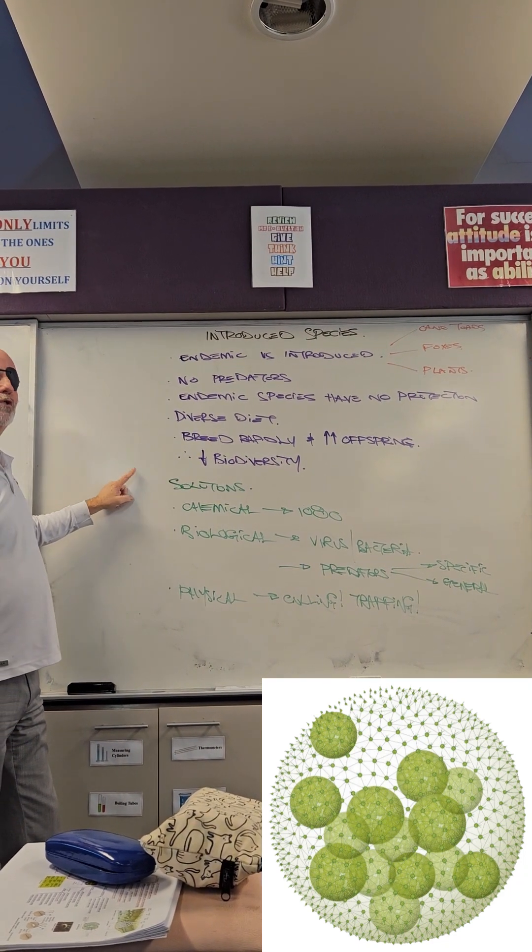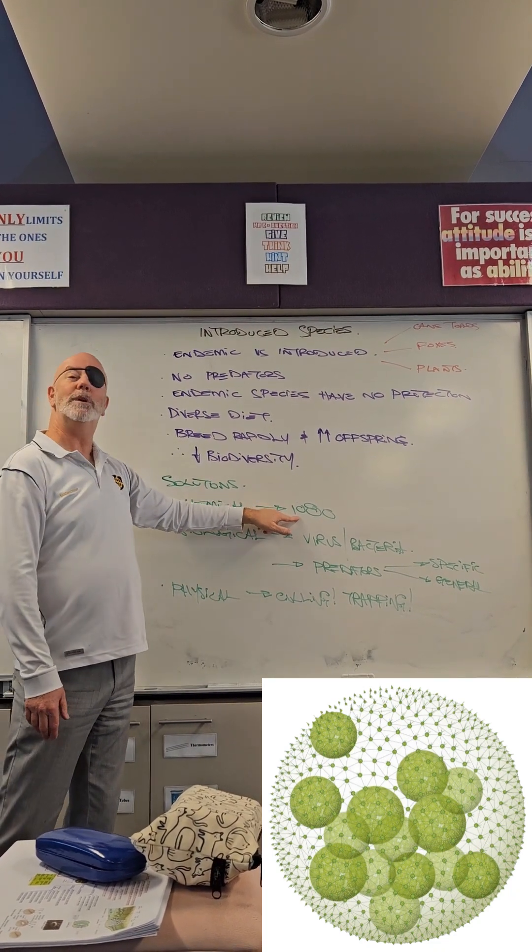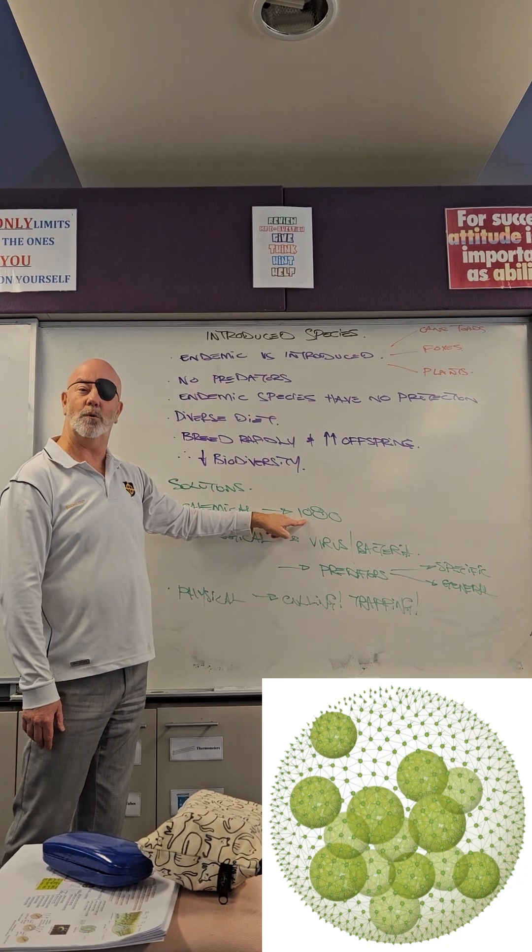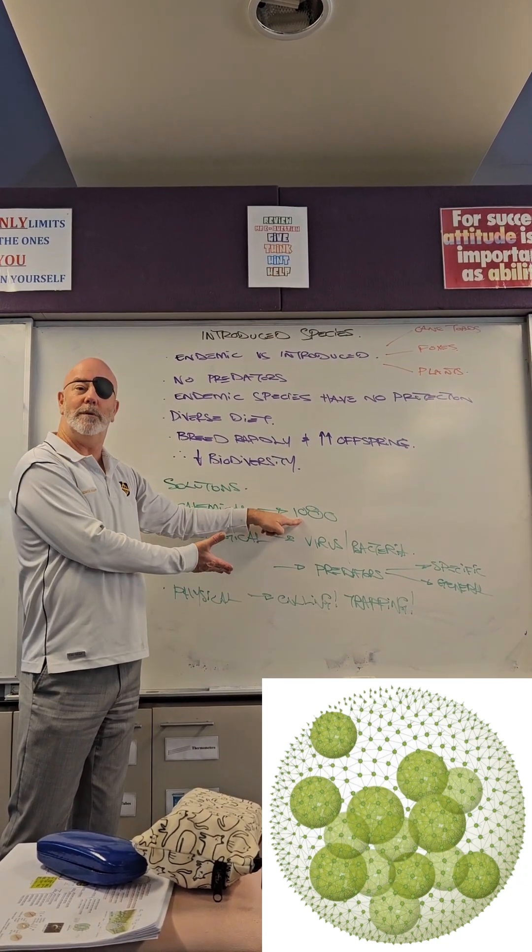The ways that we can control the introduced species, we can use chemical control like 1080, which is toxic to foxes and cats and all introduced species, but the species that live in Australia are immune to 1080.